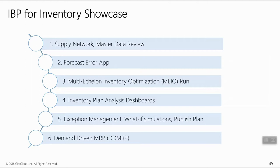We will walk you through the supply network that we put together just for this webinar, all the master data that is going in with it so you have a sense of the data model, the product relationships, and the customer sets that you're looking at. We will next go into a forecast error calculation process using a standard app within IBP, so you understand how to generate error based on individual lag, forecast, calculate and cap bias, look for intermittency, and so on.